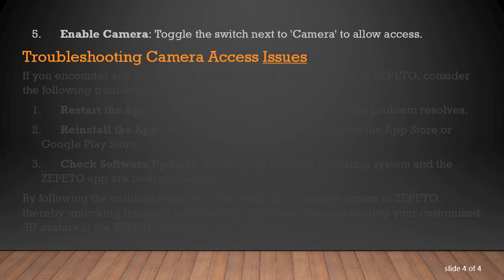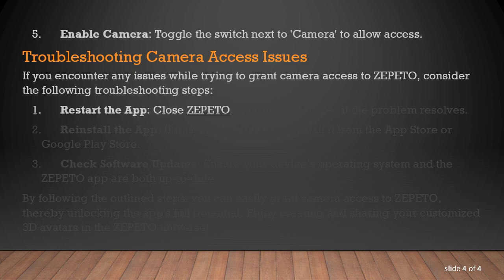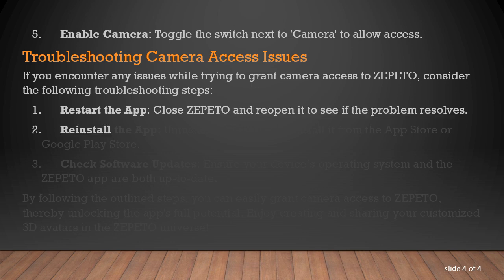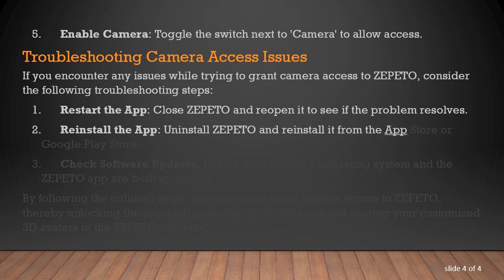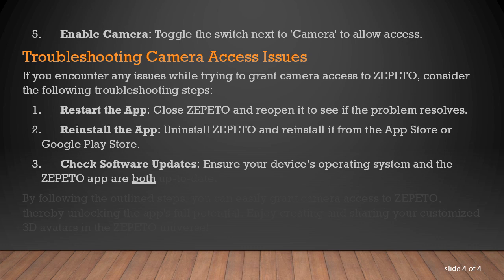Troubleshooting Camera Access Issues. If you encounter any issues while trying to grant camera access to Zepetto, consider the following troubleshooting steps. Restart the app: close Zepetto and reopen it to see if the problem resolves. Reinstall the app: uninstall Zepetto and reinstall it from the App Store or Google Play Store. Check Software Updates: ensure your device's operating system and the Zepetto app are both up to date.